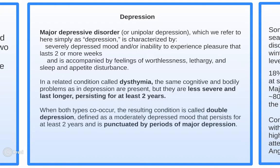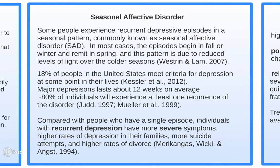One comical, not fully representative example is Eeyore from Winnie the Pooh. Seasonal affective disorder occurs when some people experience recurrent depressive episodes in a seasonal pattern, generally in the fall and winter, remitting in the spring due to reduced levels of light over the colder seasons.